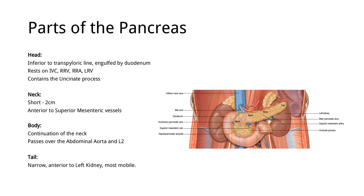The parts of the pancreas are the head, neck, body, and tail. The head is located inferiorly to the transverse line, and it is engulfed by the duodenum. The duodenum makes a C-shaped structure around the head of the pancreas.